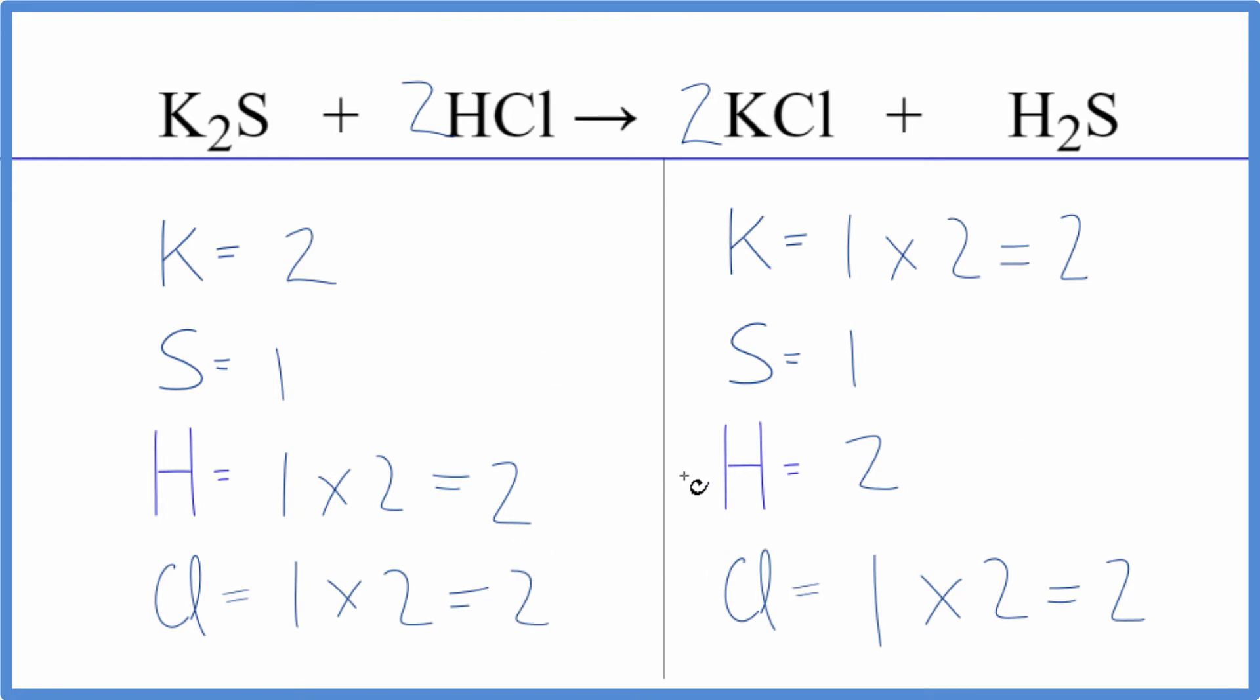This equation is balanced. So when this reaction happens, the potassium compounds are very soluble. HCl, strong acid, it's going to be soluble. Potassium compound again. But this H2S, this will be a gas. So we have these react, and this gas bubbles out of our test tube.